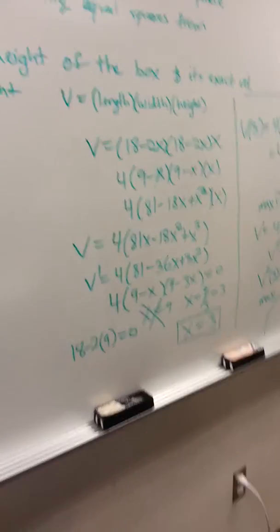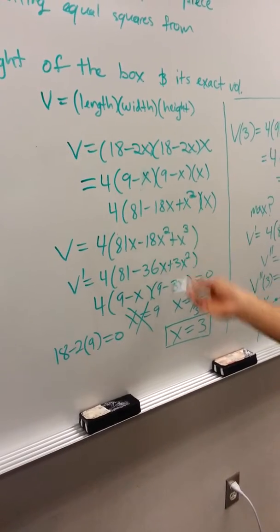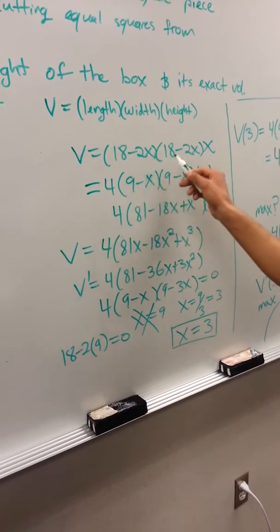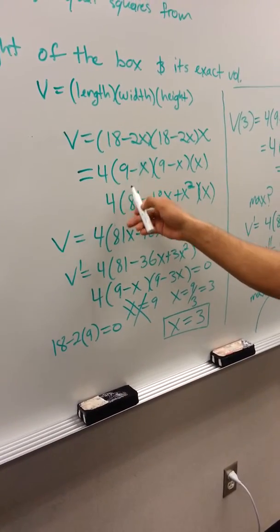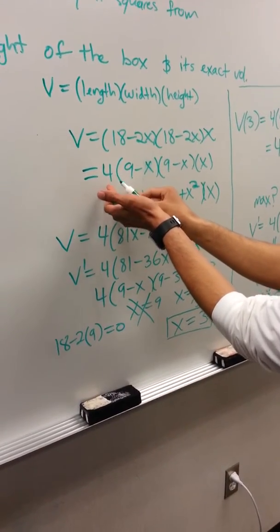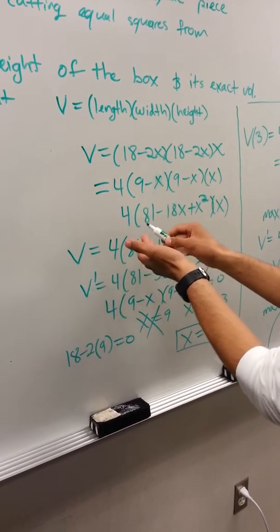I pulled out a 2 from each of these, so 2 times 2 is 4, which gets factored out to the outside. It's a little confusing, you just have to look over it.